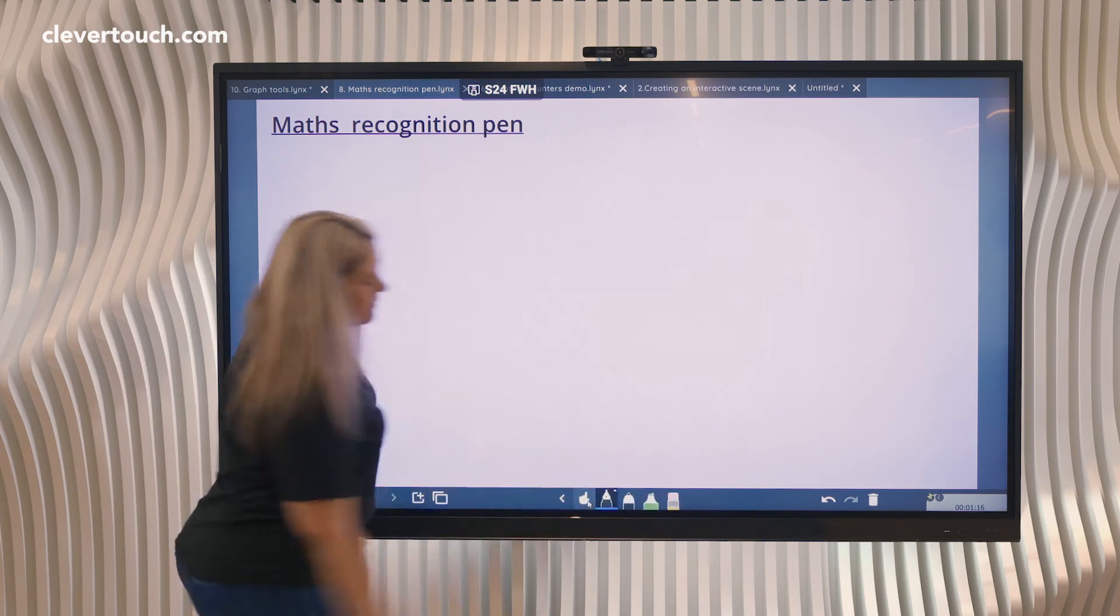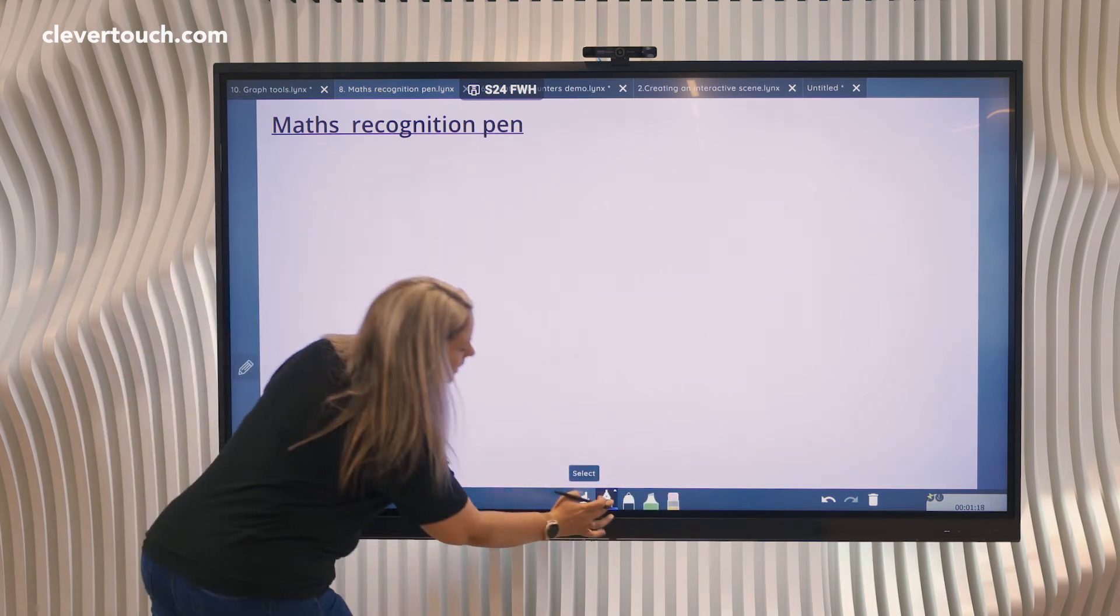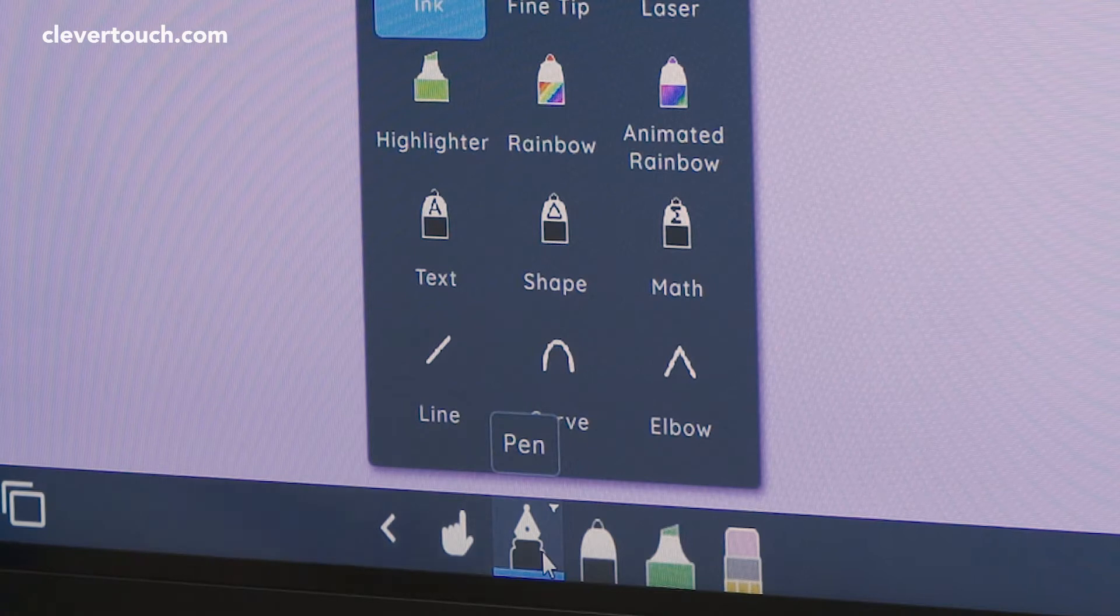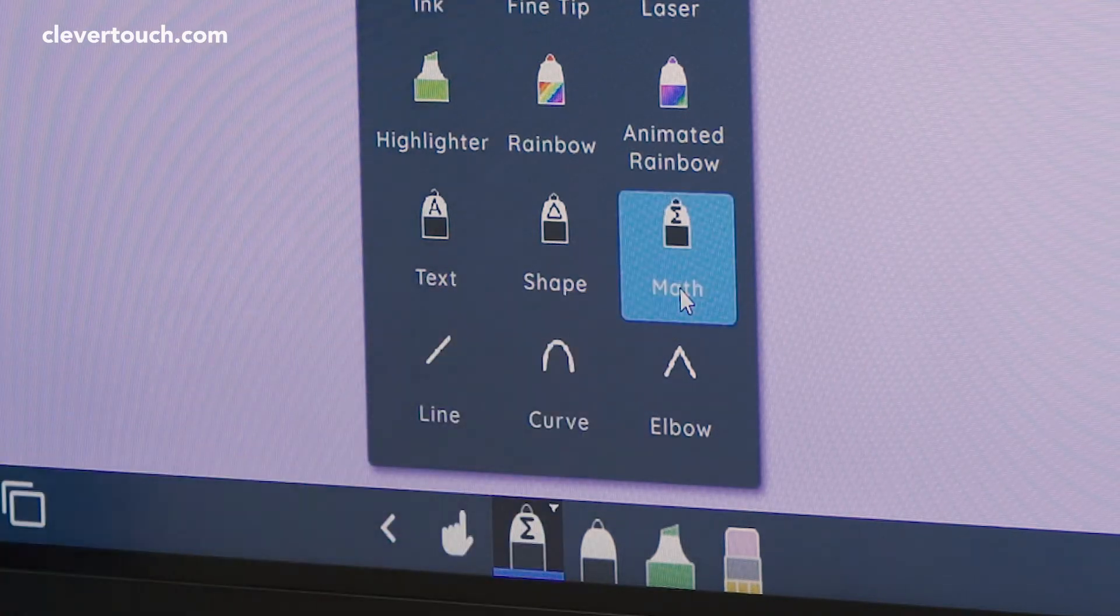If we go down to our pens at the bottom of the toolbar, we can click here and you can see we've got our maths tool.